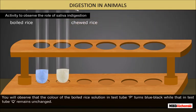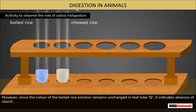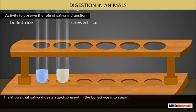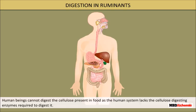You will observe that the color of the boiled rice solution in test tube P turns blue-black, while that in test tube Q remains unchanged. The blue-black color in test tube P indicates the presence of starch. Since the color of the boiled rice solution remains unchanged in test tube Q, it indicates the absence of starch. This shows that saliva digests the starch present in the boiled rice into sugar.